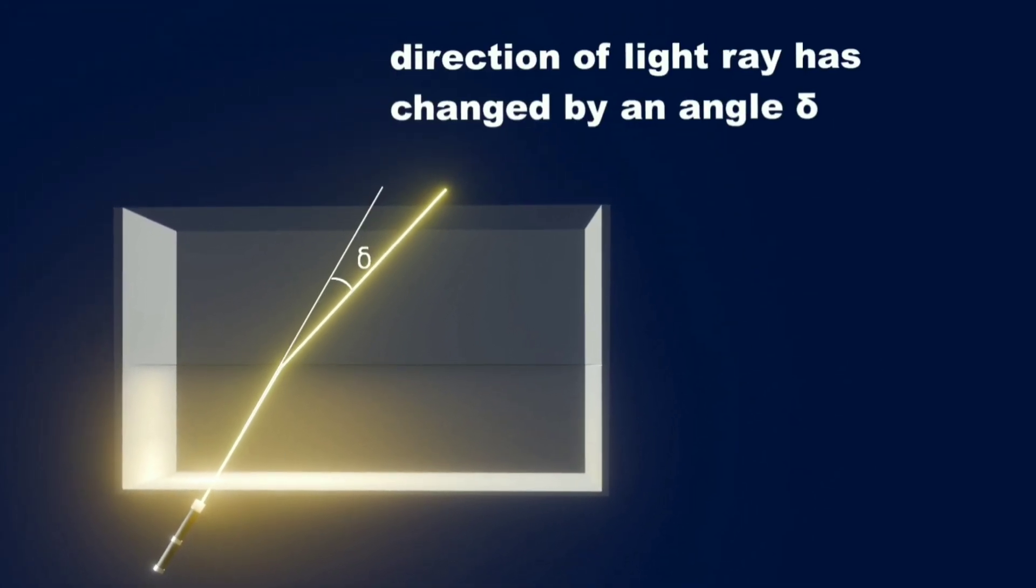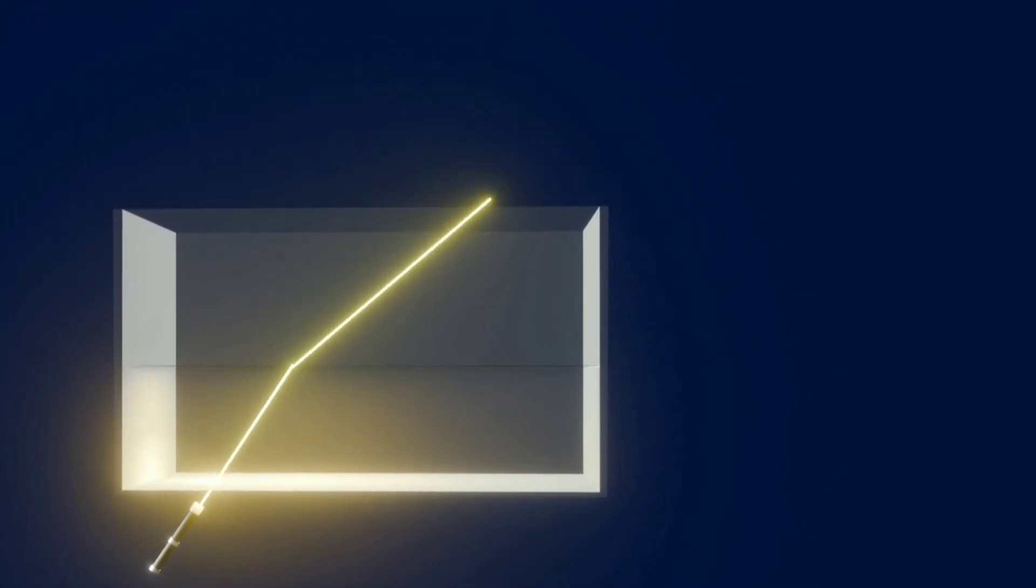we see that due to refraction the direction of light rays changes. Now if we continuously rotate the laser torch,